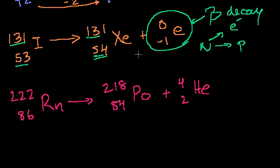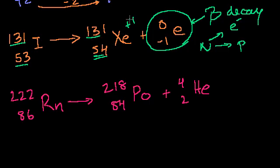That same logic holds — you might say, hey, I just went from 53 to 54 protons, so now with this extra proton won't I have a positive charge? Well, you would. But very quickly this atom will grab some electrons from someplace to get stable. You're completely right in thinking that it would be an ion for some small amount of time.